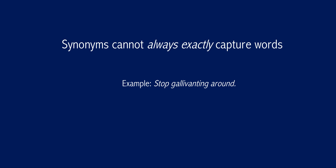For example: 'stop gallivanting around.' I could say 'stop moving around' or 'stop traveling around,' and I would not lose the core idea of the passage — asking you to stop moving. But I would lose some additional detail that 'gallivanting' gives us: the idea that the person is moving around to seek pleasure, to waste time. Moving and traveling do not convey the same essence, and so although they can be used interchangeably with little error, they're not quite the same. Therefore we use 'most nearly' just to recognize this.